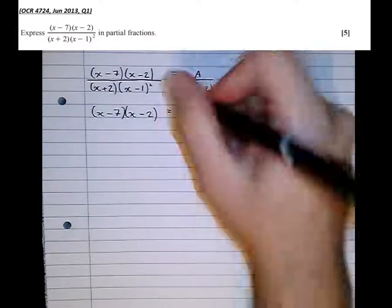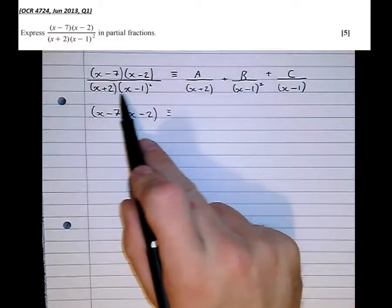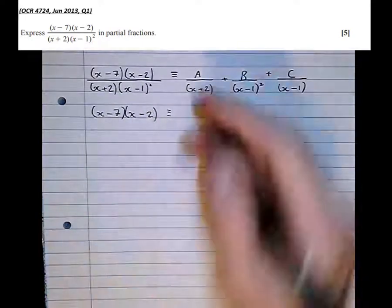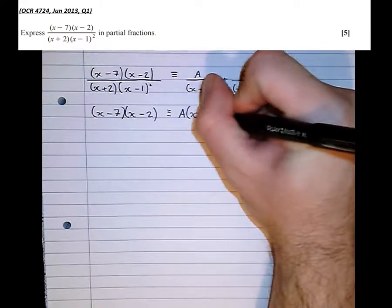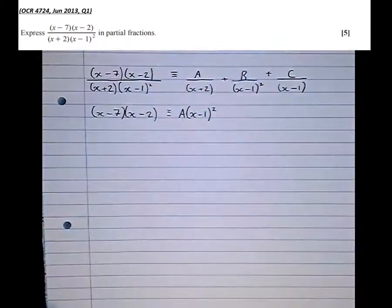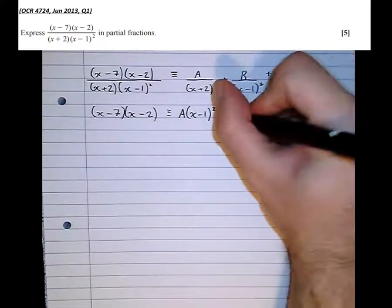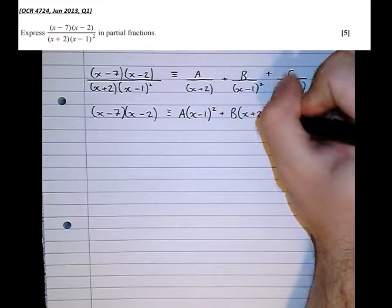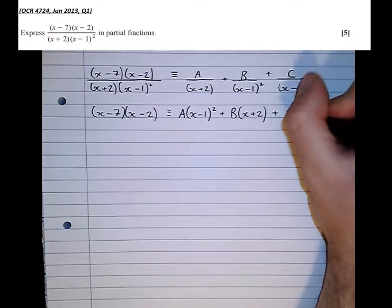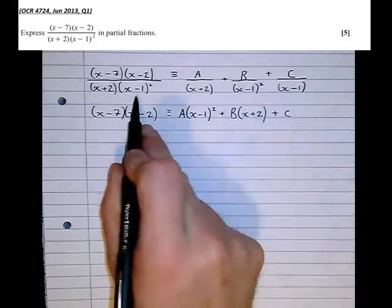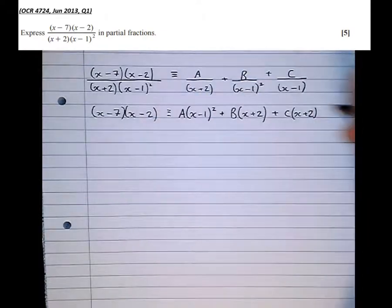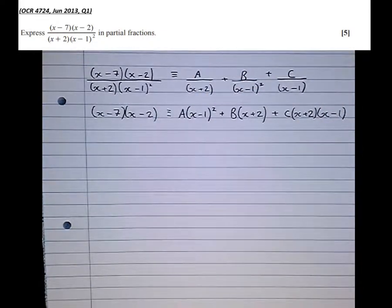And on the right-hand side, we see that if we multiply by this, the x plus 2 on the denominator will cancel. The x minus 1 squared will cancel here. And here, one of the x minus 1's will cancel. So we end up with the x plus 2 still being there, and the x minus 1 still being there.